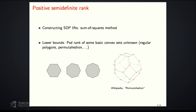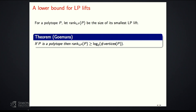The main motivation for this work is actually a very simple fact about LP lifts, an observation due to Michel Goemans. An LP lift of a polytope is a representation as the projection of another polyhedron, and the size is the number of facets of the polyhedron upstairs — this is the LP rank, or non-negative rank. Goemans's observation says that the non-negative rank of P is at least the logarithm of the number of vertices of the polytope.